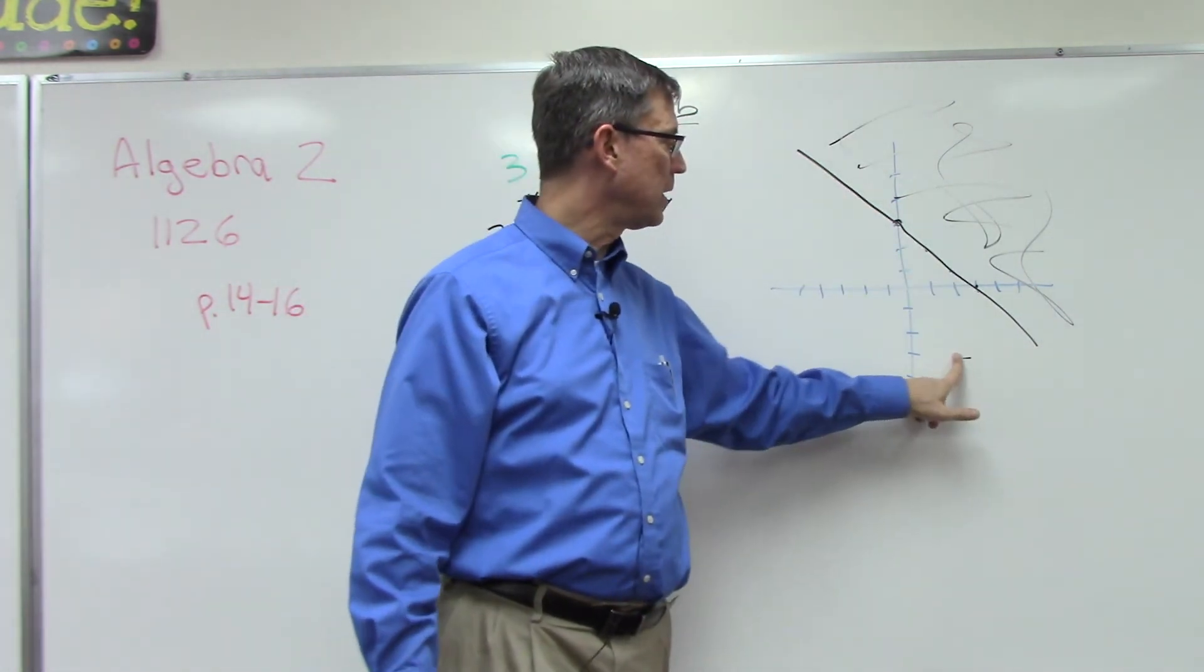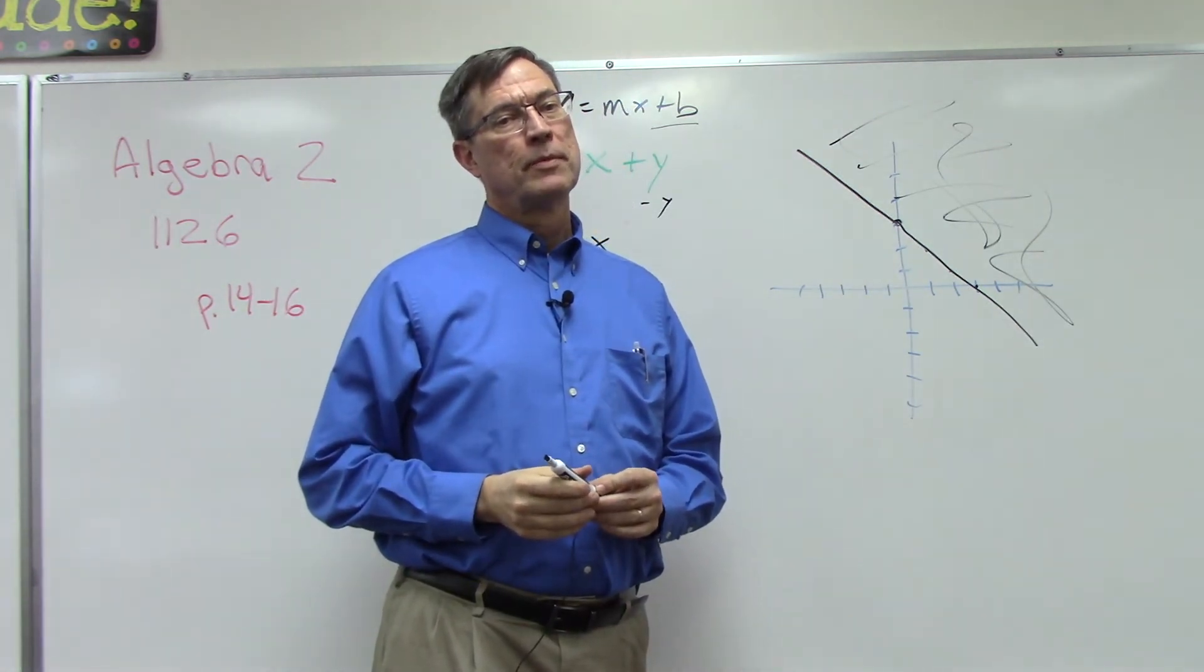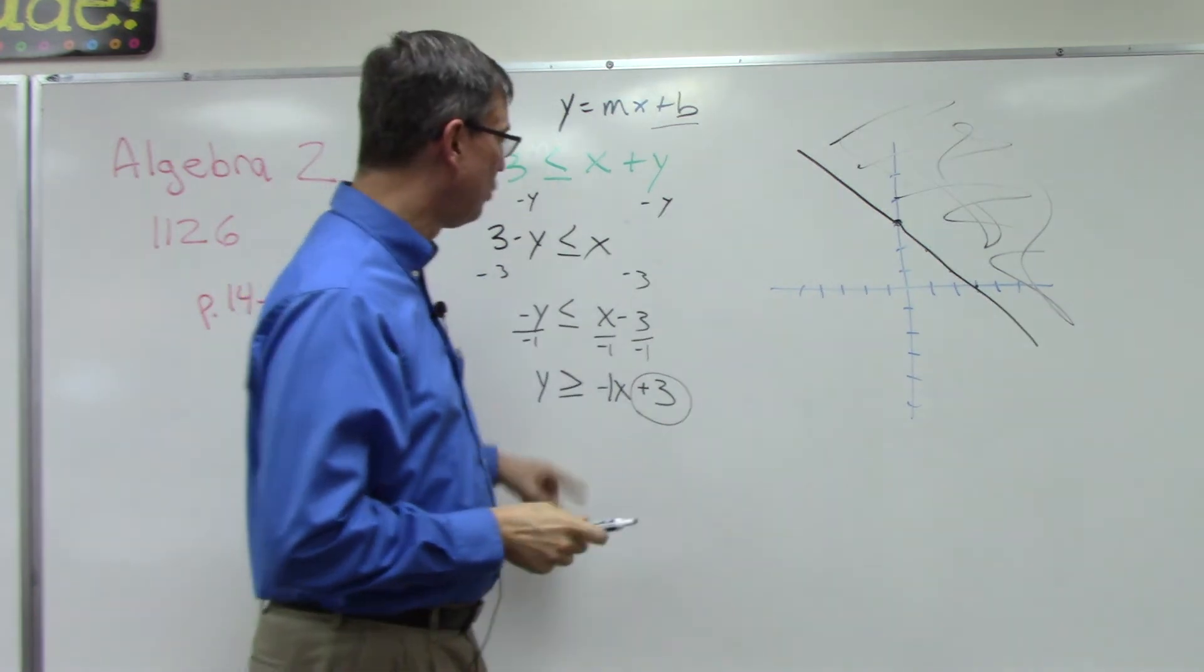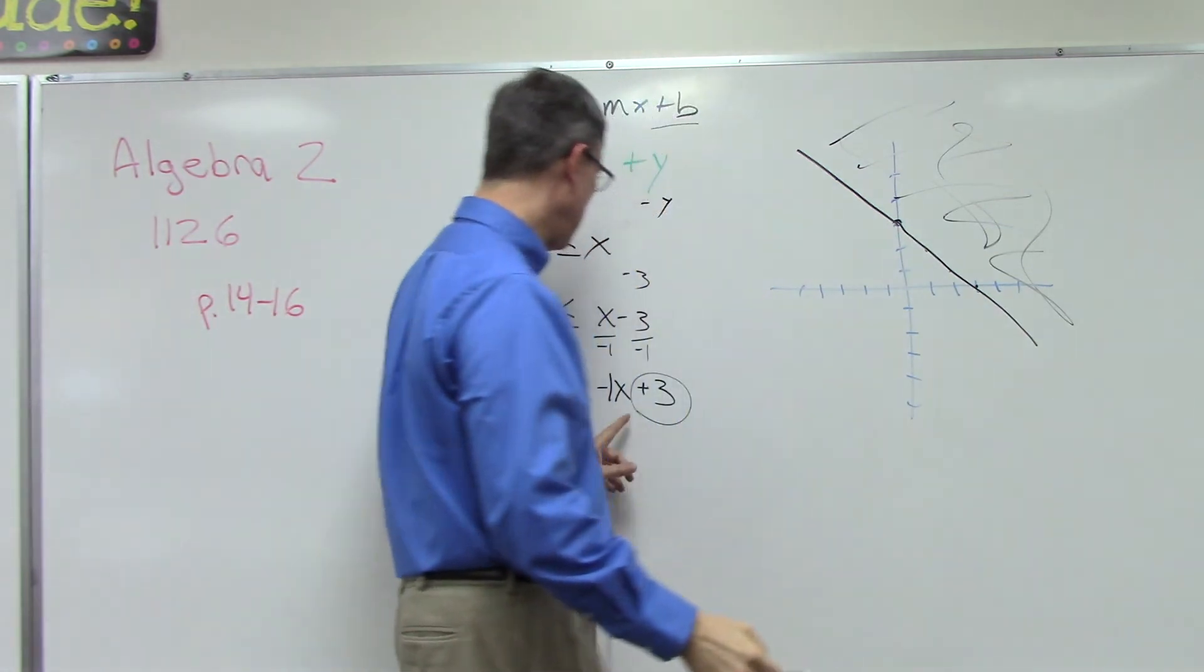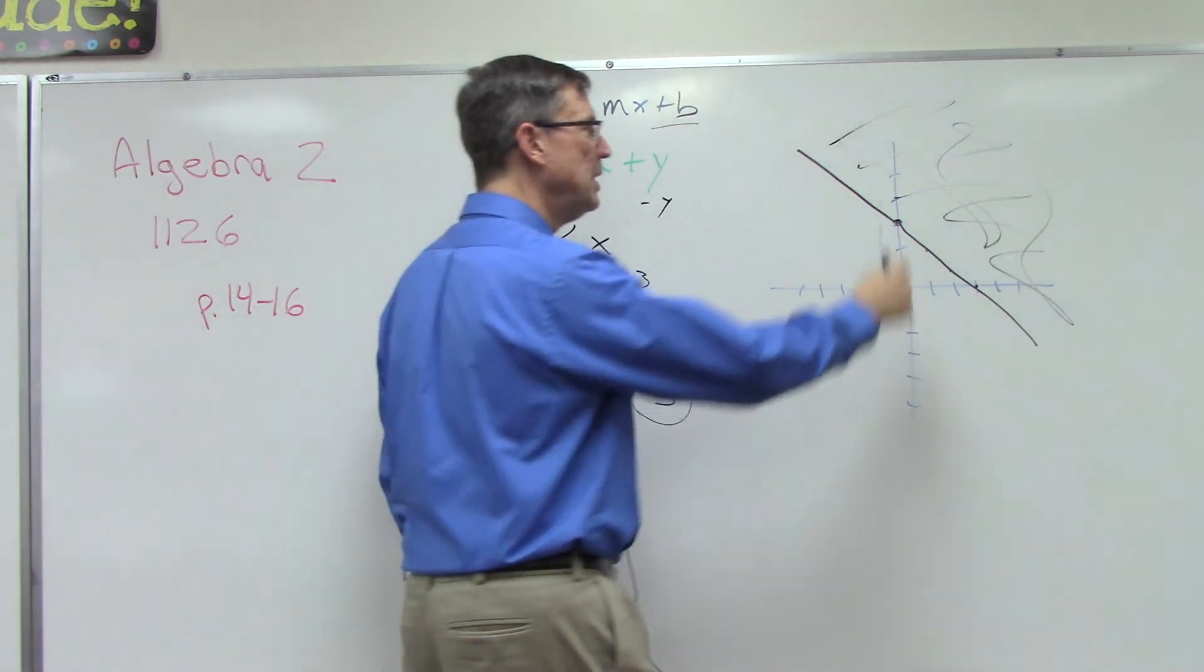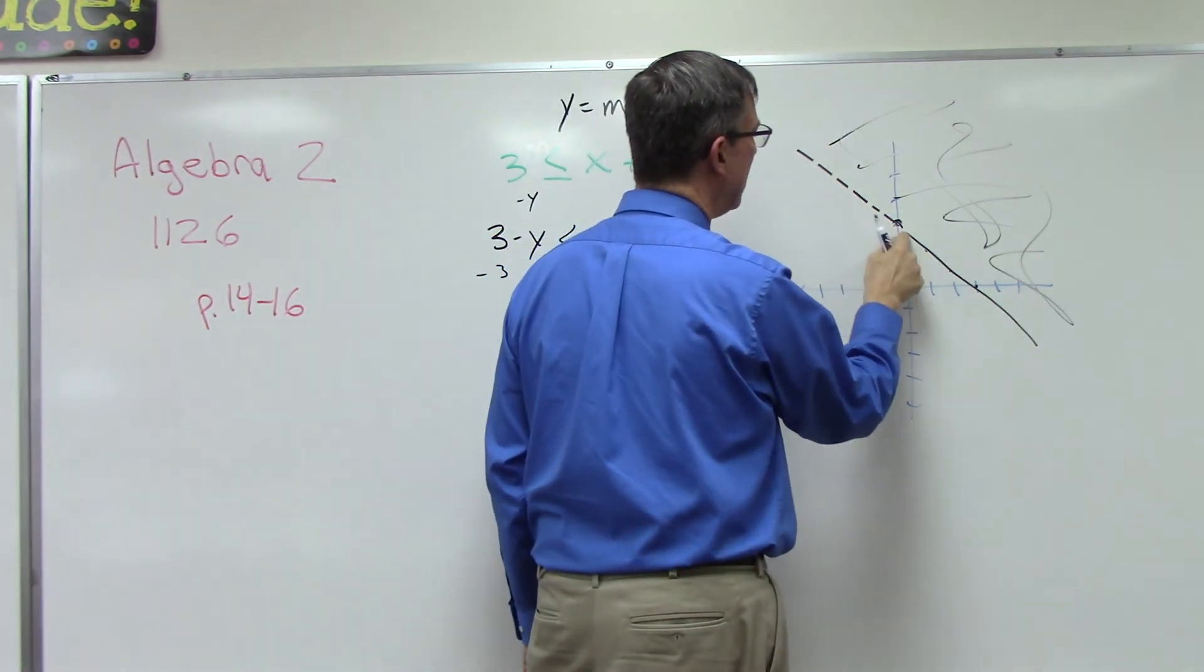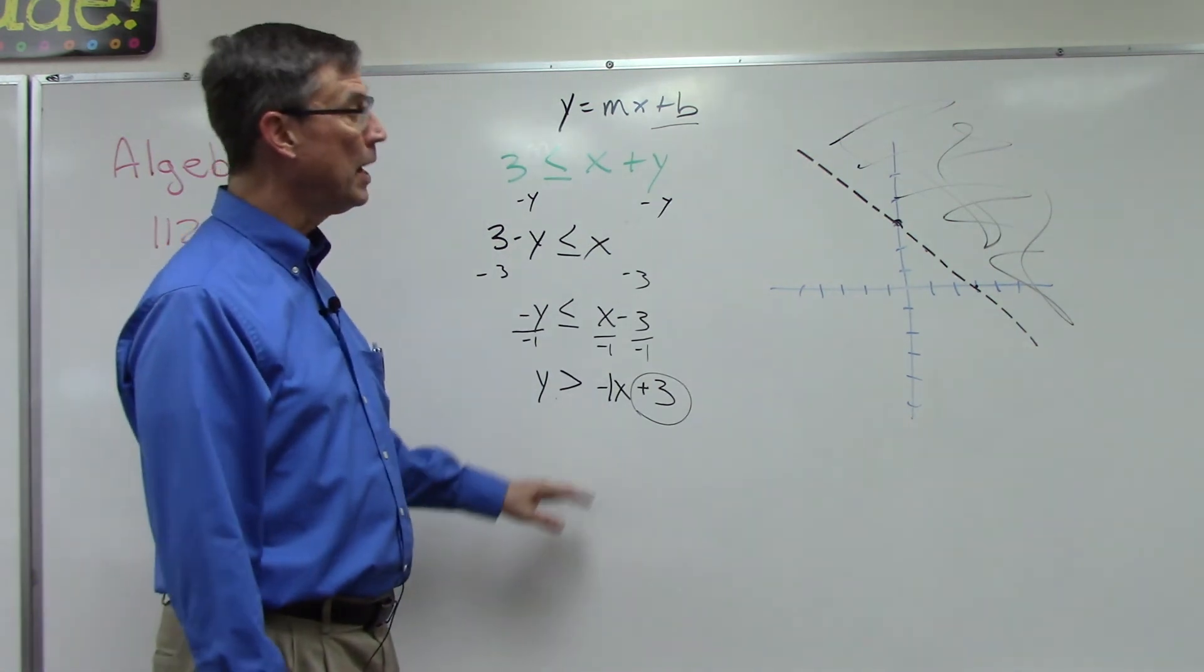Now, should this be a solid line or a dotted line? That's the last thing we need to review. The solid line is if we have a line underneath, because it could be equal to that. That means the points that actually lie on this line do satisfy this because of the equals. If we did not have the equals, that means any point up here would make this a true statement, but the points actually on the line would not make it a true statement. So then we would have to make it a dotted line if we did not have the equals.